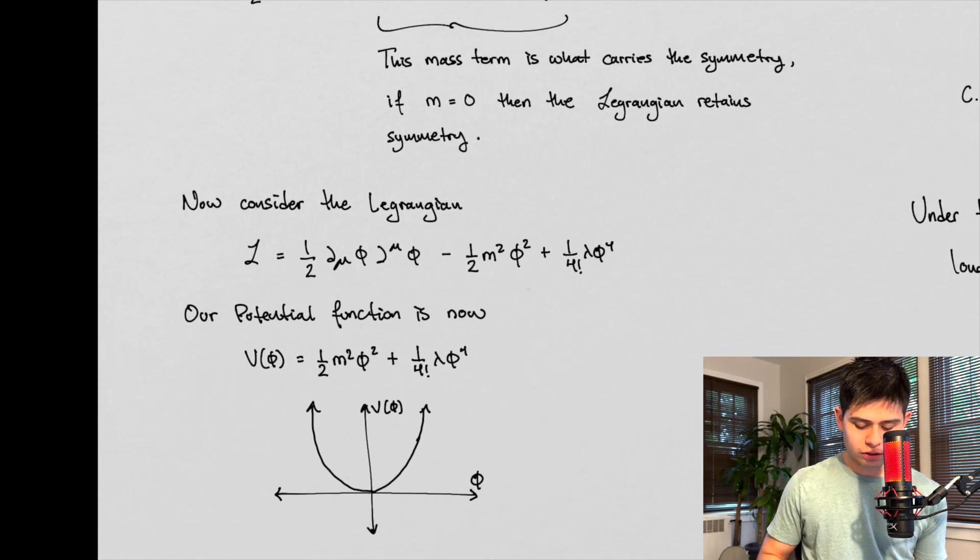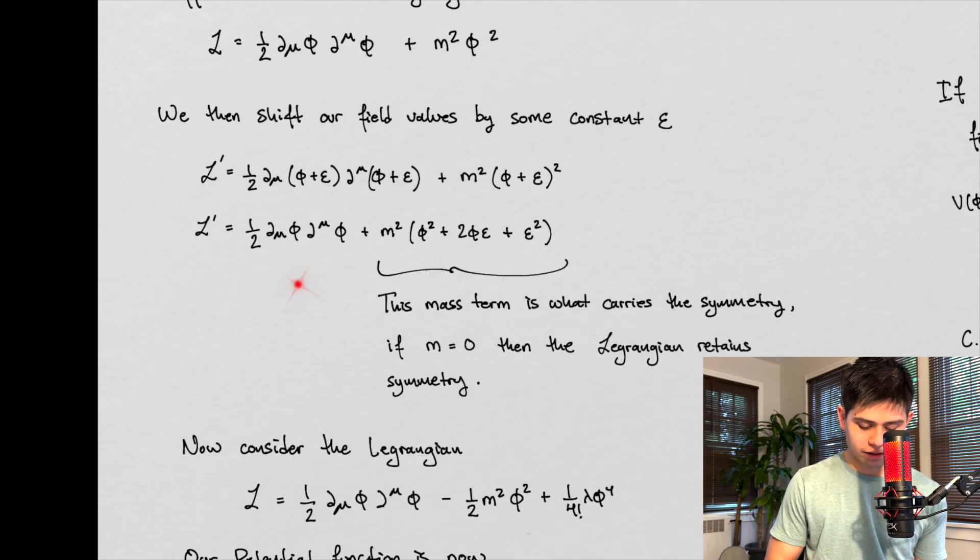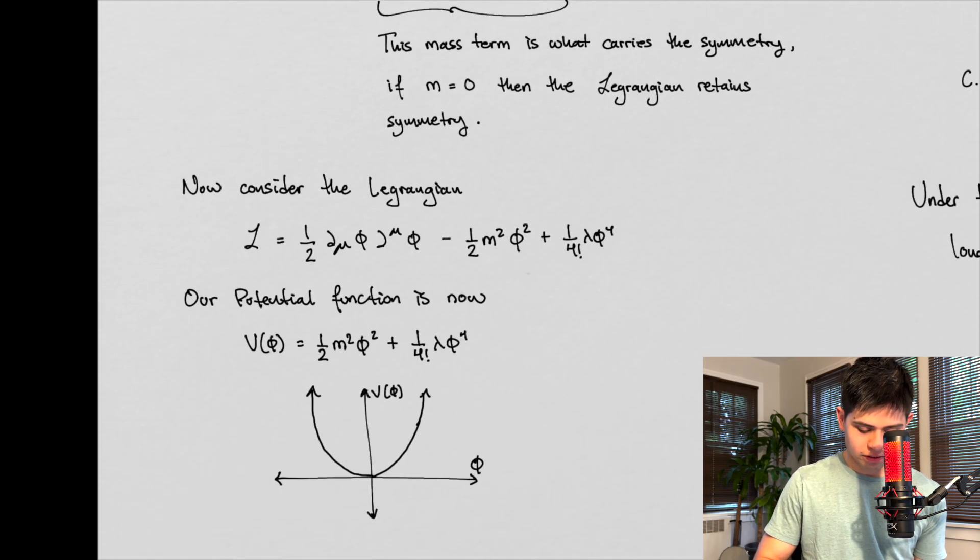So now let's consider this Lagrangian. We want to keep this sort of in the back of our minds when we're thinking about this. But let's consider this Lagrangian now. It's not that much different. The only real difference is this guy right here. But we're going to see it's not really going to play that much of a role.